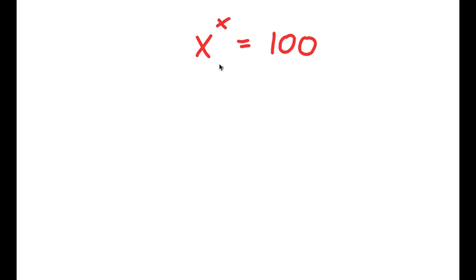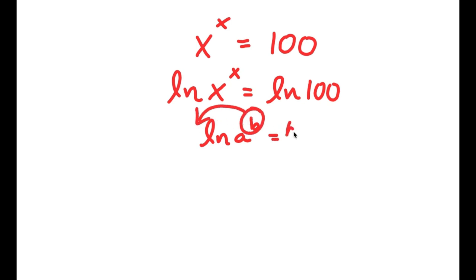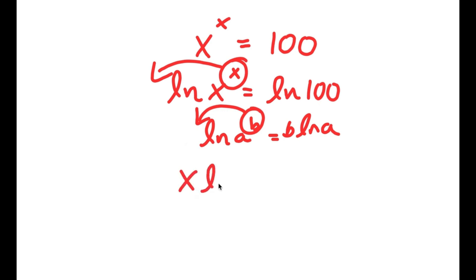In this problem, I have x to the power of x equals 100. I'll start by taking the natural log on both sides, giving ln of x to the power of x equals ln 100. Using the log power rule — ln of a to the power of b equals b times ln a — I can move x to the front, getting x times ln x equals ln 100.